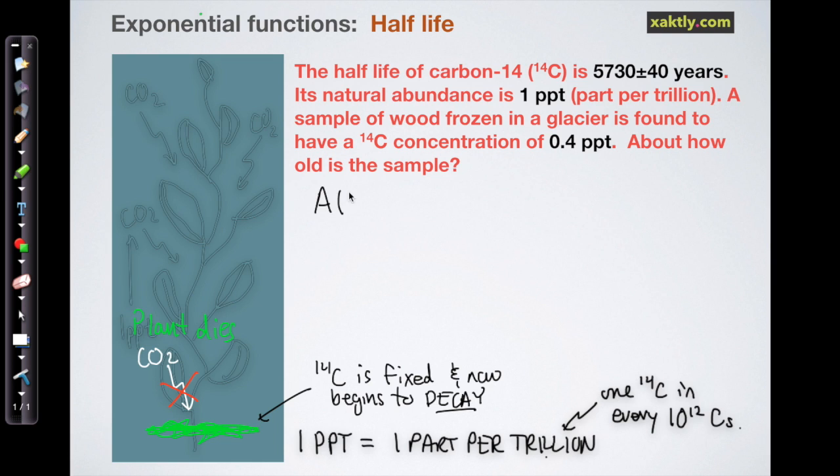We'll start by writing down the half-life formula. That's A(t) equals A-naught times one-half to the t over k, where k is the half-life. Now we'll just organize ourselves and fill in what we know. A(t) is 0.4 parts per trillion, the initial amount is one part per trillion, and the half-life of carbon-14 is 5,730 years, plus or minus about 40 years. We'll stick to 5730.